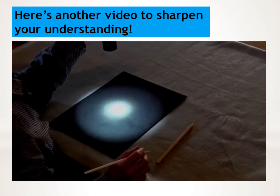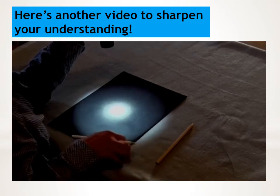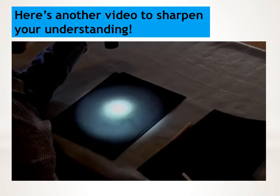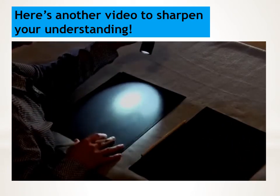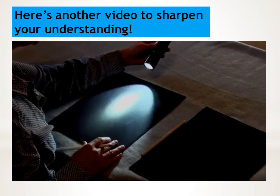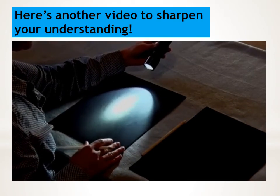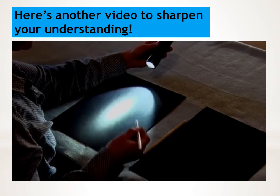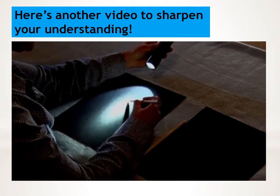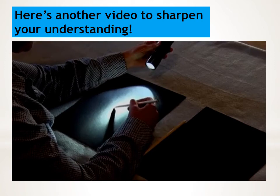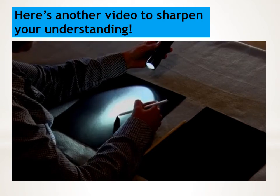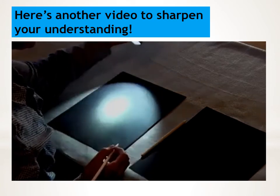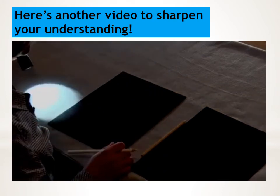Now I'm going to take the second sheet of paper and hold the flashlight — or my volunteer would hold the flashlight — at an angle. And again, I would ask a student, or I could do it myself, to trace the shape of the light. Then ask the students what shape they see there, and they would say an oval or an ellipse.